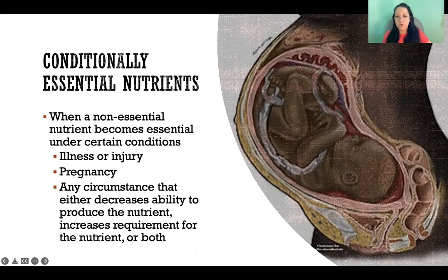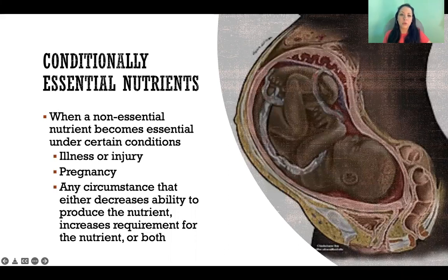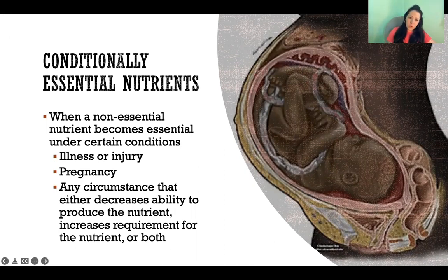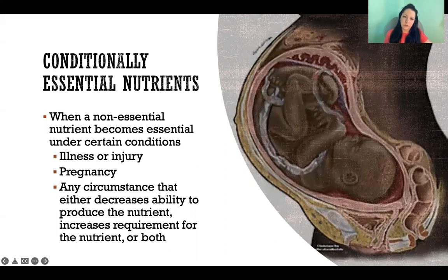That can mean that for some reason we aren't producing as much anymore — maybe our demand hasn't changed, but our ability to produce it has been impaired. Or it could be that we're producing as much as usual, but our demand for that nutrient has increased. For example, during pregnancy the demand for certain nutrients increases, and while your ability to produce more might also increase, you may need to get some of those non-essential nutrients through the diet to make up the difference.